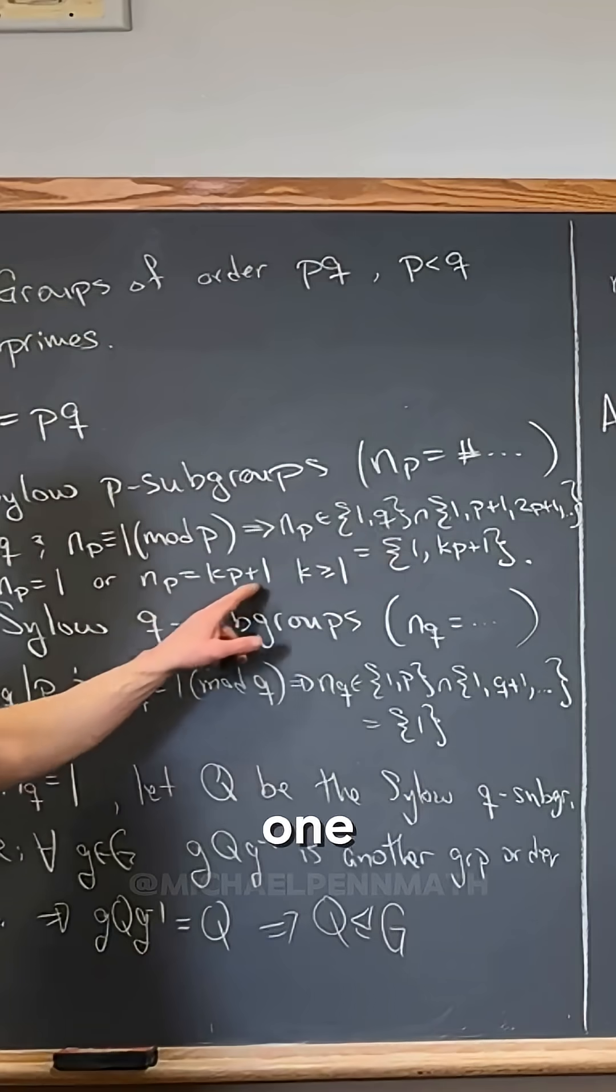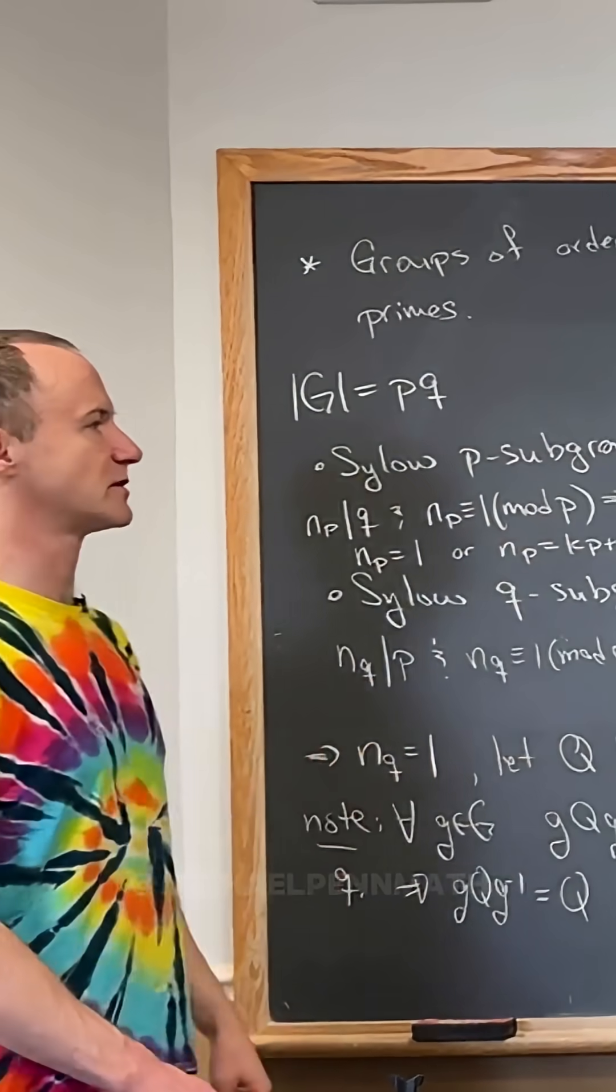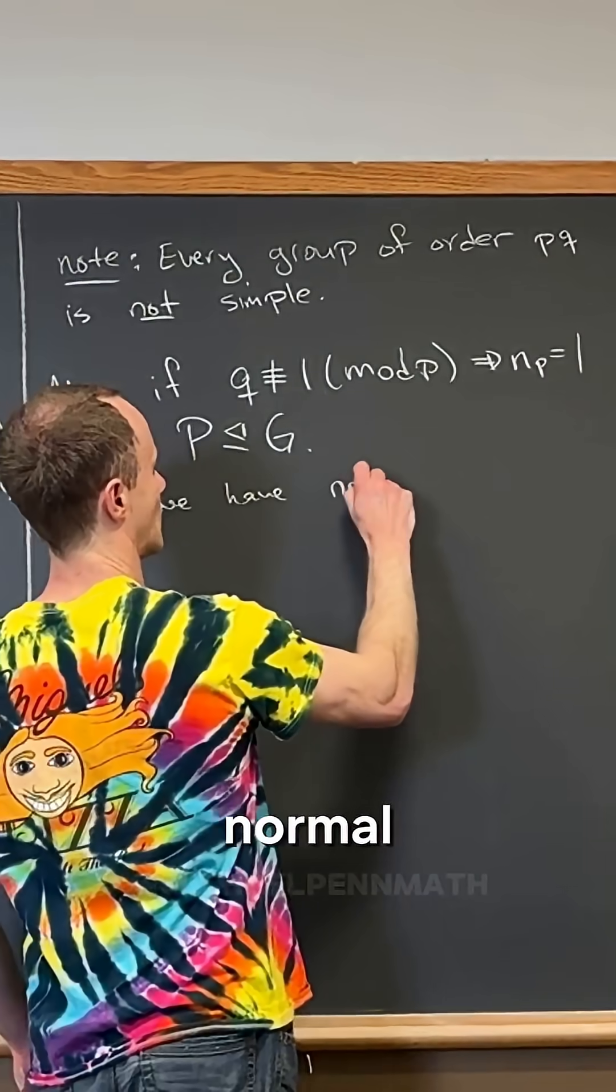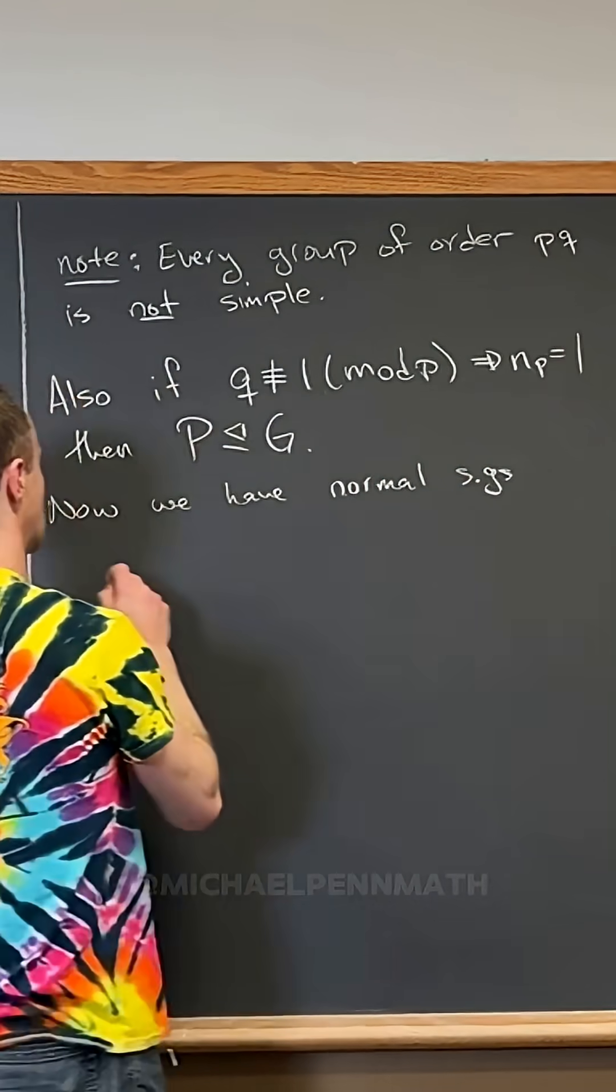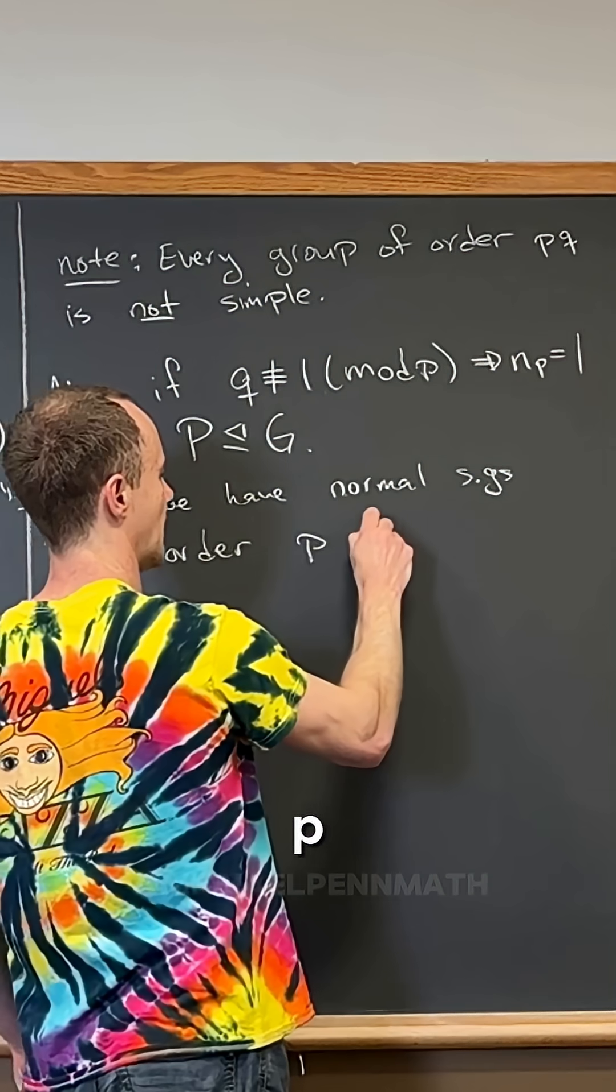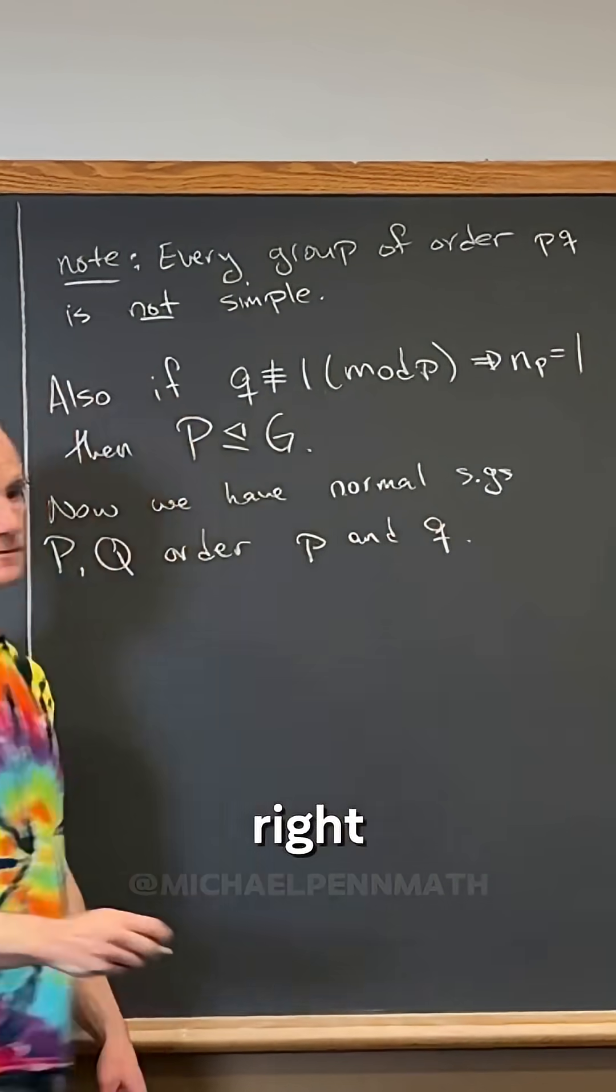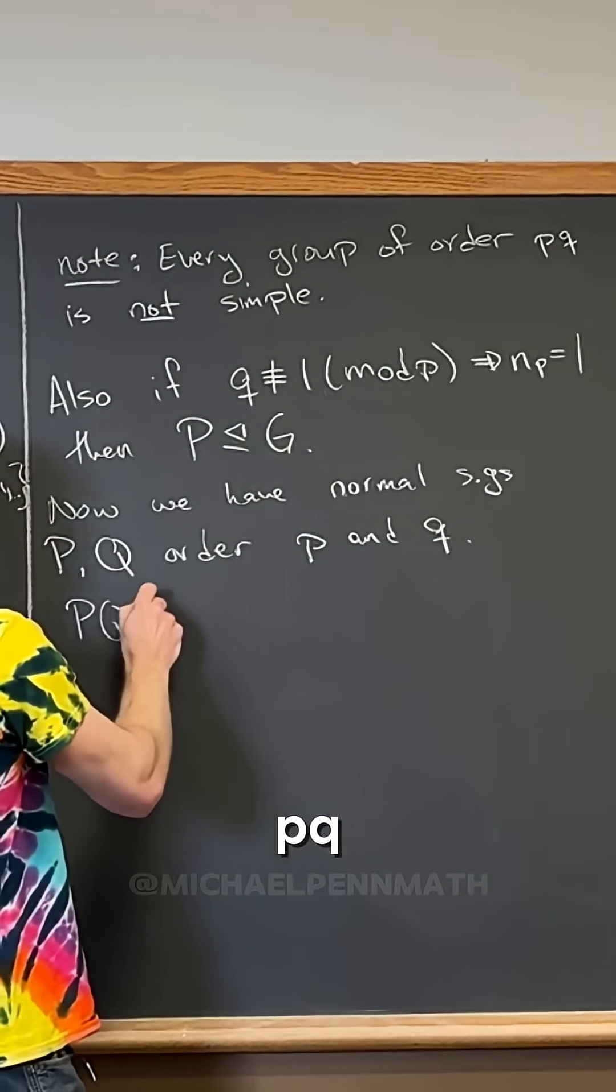But if q is not one of these, then it can't be q. Then notice now we've got two normal subgroups. Now we have normal subgroups P and Q of order p and q. But now that means that PQ is a subgroup of G.